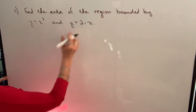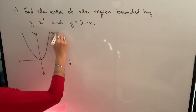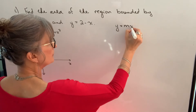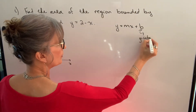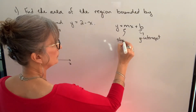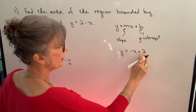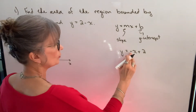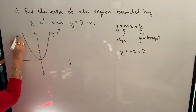y equals x squared is a parabola. And y equals 2 minus x is a straight line — the b value tells you the y-intercept, or where the line crosses the y-axis, and the other value tells you the slope. We can see that the y-intercept is 2 and the slope is negative 1, so our line is going to be sloping down.